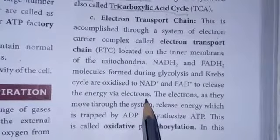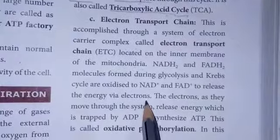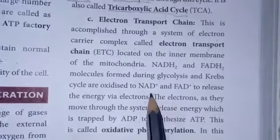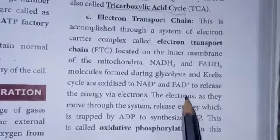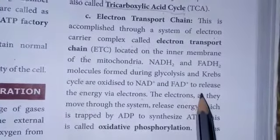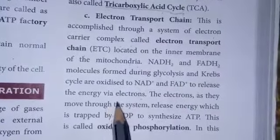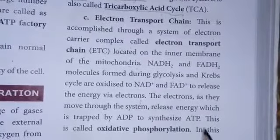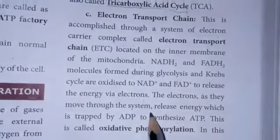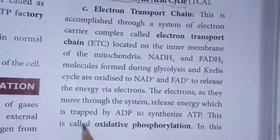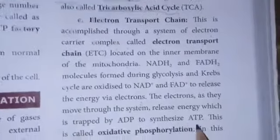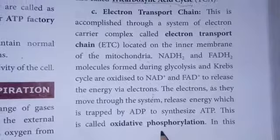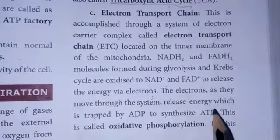The NADH₂ and FADH₂ move through the electron transport system and release energy, which is trapped by ADP to synthesize ATP. This process is called oxidative phosphorylation.